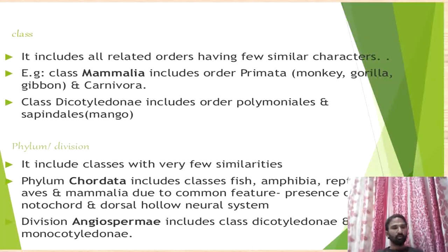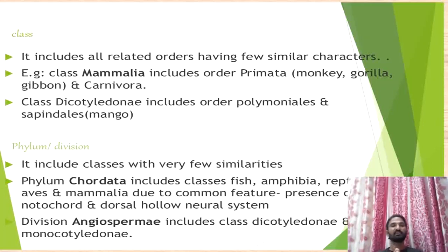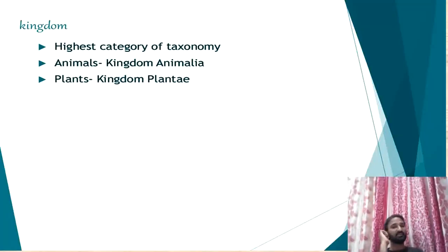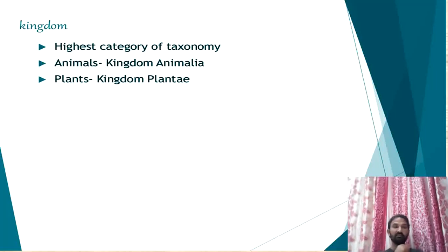The class Dicotyledonae means two cotyledons are present; the class Monocotyledonae means only single cotyledon is present. These classes are included in the division of the plant because they also have very few similar characters. The division Angiospermae includes the classes Dicotyledonae and Monocotyledonae. Other divisions are also present: Thallophyta, Bryophyta, Pteridophyta, Angiosperms, and Gymnosperms. These are the different divisions present in the plant kingdom — the highest category of taxonomy. Animals are under the Animalia kingdom; plants are under the plant kingdom.